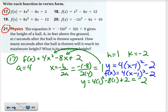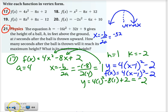The next one is the lovely number 21 here, physics problem. The equation h equals negative 16t squared plus 32t plus 9 gives the height of a ball, h, in feet above the ground at t seconds after the ball is thrown upward. How many seconds after the ball is thrown will it reach its maximum height? And what is its maximum height? So I think about what's going on with that negative 16, and I realize an upside-down parabola is what I'm looking for here. And if I want to figure out things about that highest point, I'm going to need to find the vertex because that's where it is.